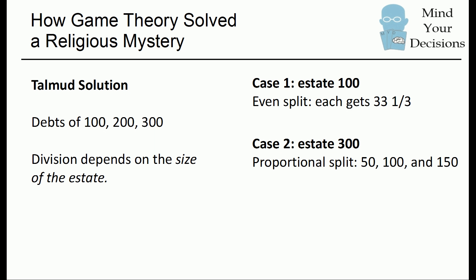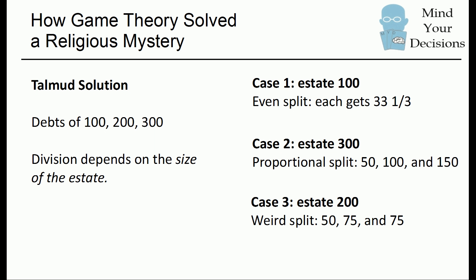You could understand this as something we might use in modern legal settings: if a company goes bankrupt, you divide up the assets and give them to creditors based on how much each of them claims. So the person who claims 300 should get three times as much as the person with a 100 debt. But it's already unclear why the division should be different between estate sizes of 100 and 300 — why should one be an even split and the other a proportional split? Things get really weird when the estate is 200, where the text indicates the split should be 50, 75, and 75.